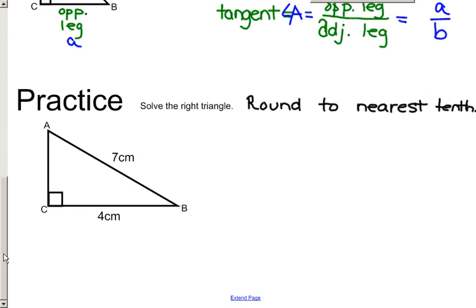Right triangle trig is often used in many applications, one of which is to solve a right triangle. Solving a right triangle means you find the length of all the missing sides and angles. So in this diagram, we want to find the length of AC, we want to find the measure of angle A, and find the measure of angle B.